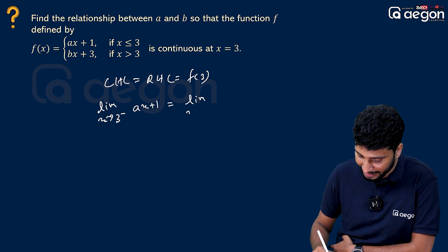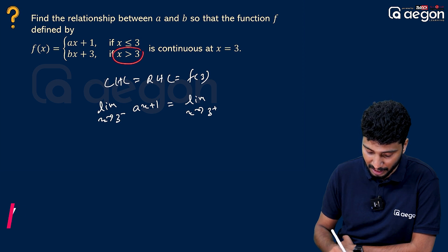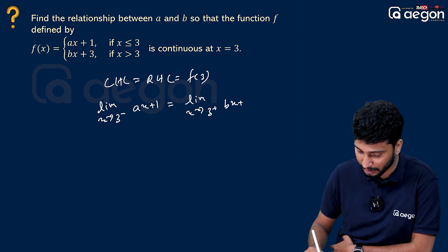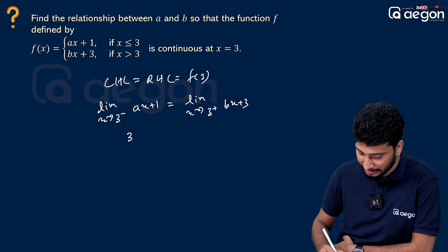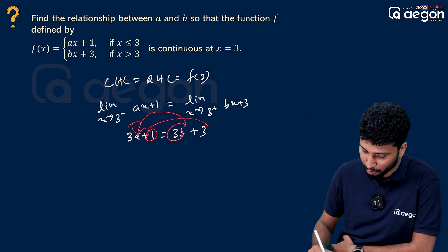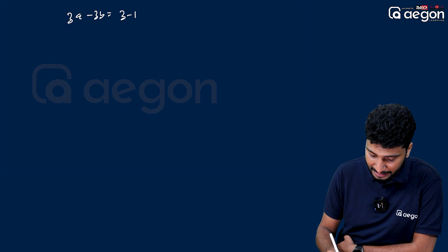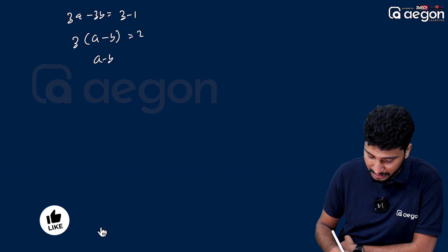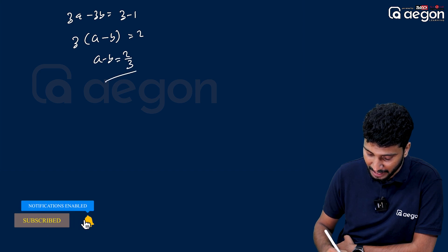RHL: limit as x tends to 3 plus, for x greater than 3, function is bx plus 3. Setting LHL equal to RHL: 3a plus 1 equals 3b plus 3. Rearranging: 3a minus 3b equals 2, so 3(a minus b) equals 2, therefore a minus b equals 2 by 3.